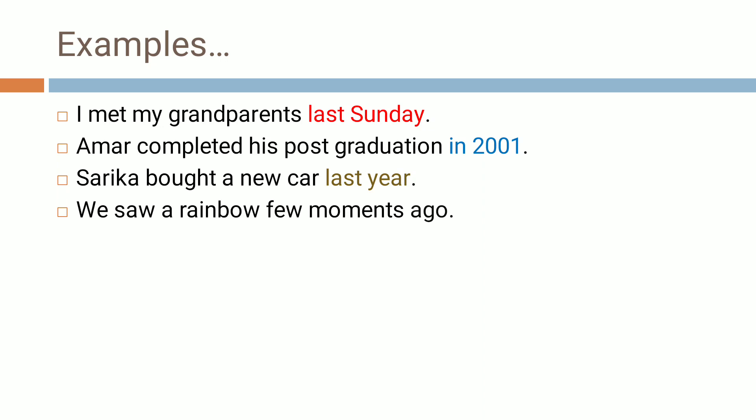Look at the examples. 'I met my grandparents last Sunday.' If you say 'I met my grandparents' with a full stop, then it is not a grammatically correct past tense. Whenever we use past tense, we have to use these timing words either in the beginning or at the end of the sentences. 'Amar completed his post graduation in 2001.' 'Sarika bought a new car last year.' 'We saw a rainbow a few moments ago.' In these four sentences, last Sunday, in 2001, last year, ago — these are timing words or time expressions.